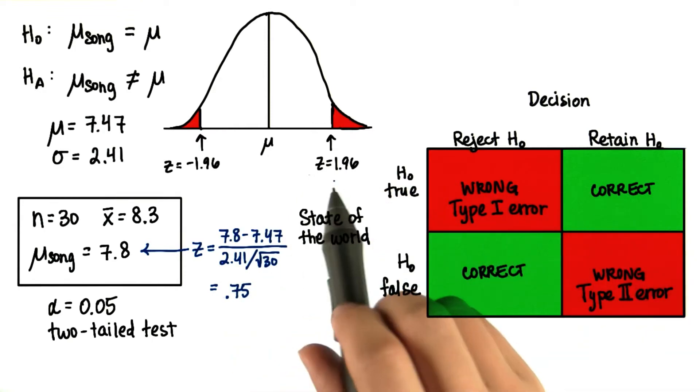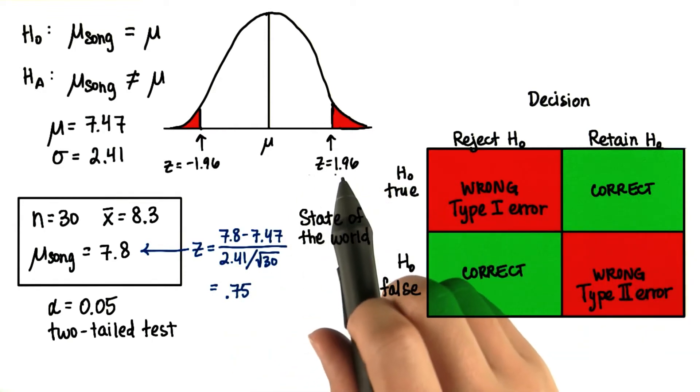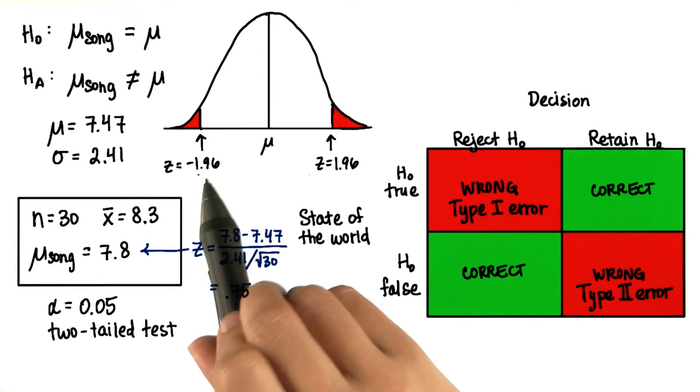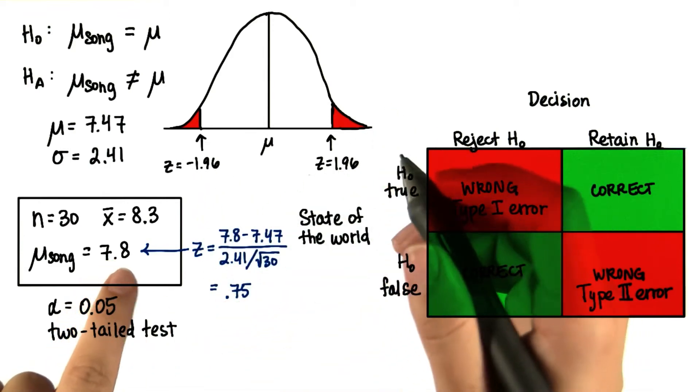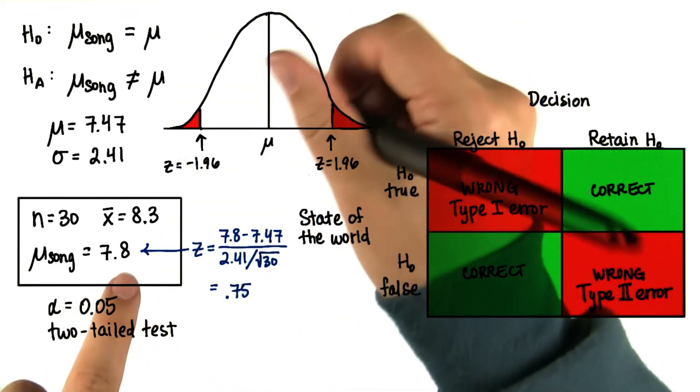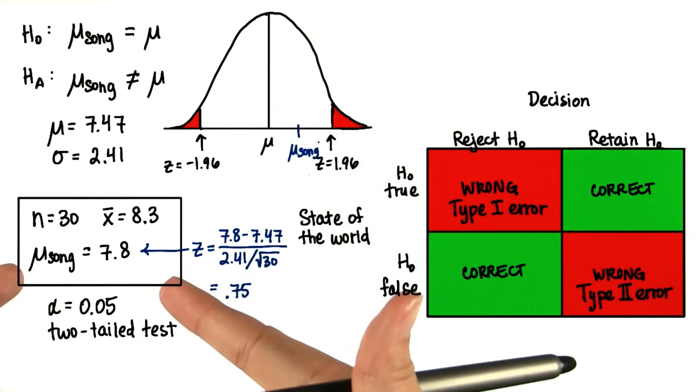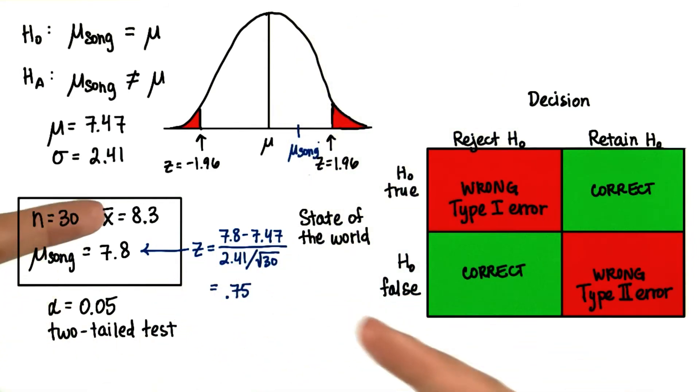Since 0.75 is less than this z-critical value but greater than this z-critical value, the true population mean does not fall in the critical region. But we don't know this. We base our decision off of our sample.